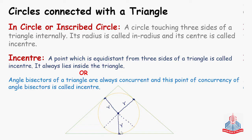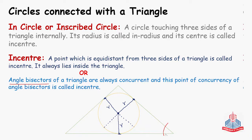Angle bisectors of a triangle are always concurrent, and this point of concurrency of angle bisectors is called in-center. An angle bisector is a line which divides an angle into two equal parts. Suppose this is an angle — the line that cuts this angle in half is the angle bisector. So, the point of concurrency of angle bisectors is called in-center.